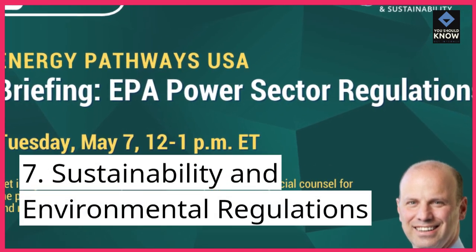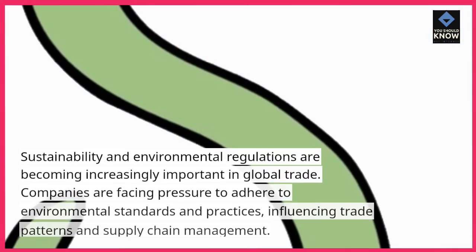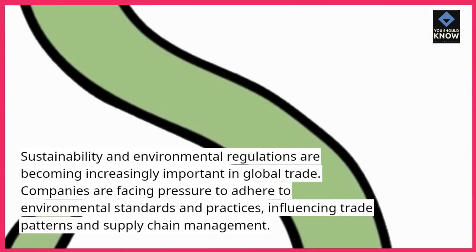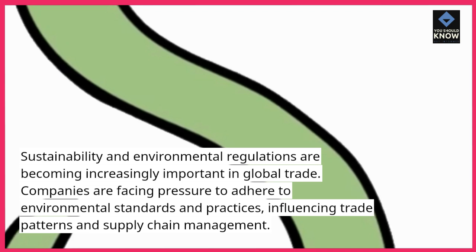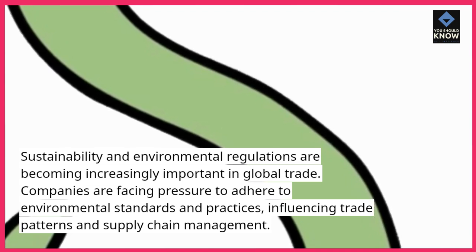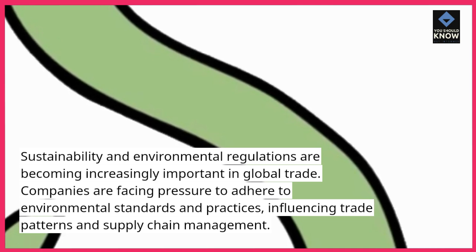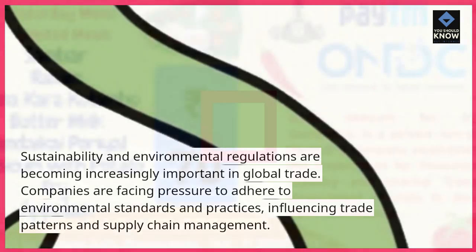7. Sustainability and environmental regulations. Sustainability and environmental regulations are becoming increasingly important in global trade. Companies are facing pressure to adhere to environmental standards and practices, influencing trade patterns and supply chain management.